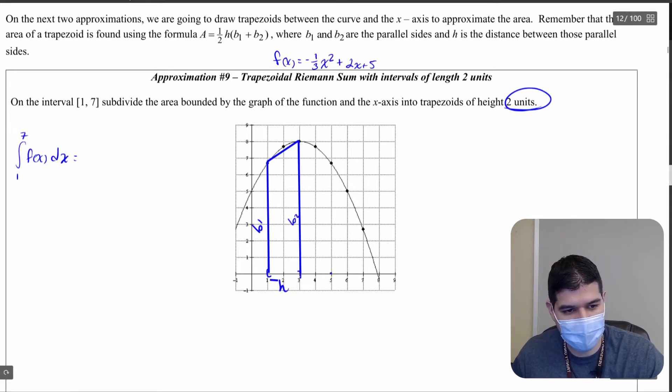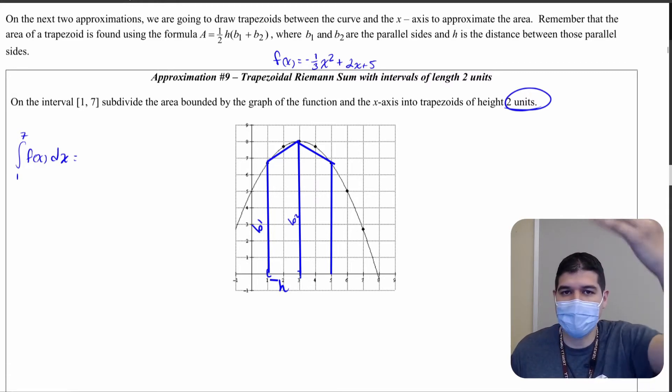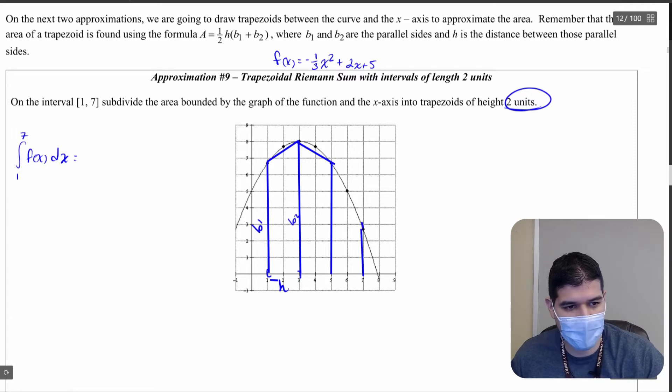So our next trapezoid is going to be here and we're going to connect those. You notice here how we have a new trapezoid and they actually share a side between the first trapezoid. And then lastly we have this trapezoid here and we're going to find our last trapezoid.